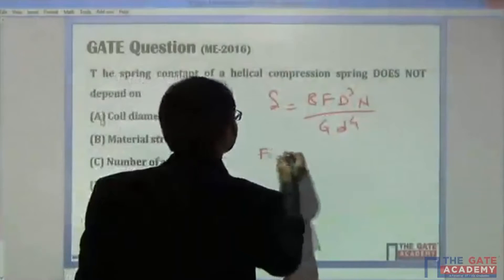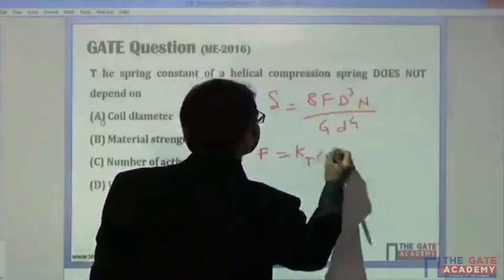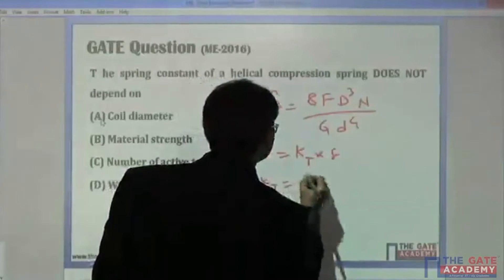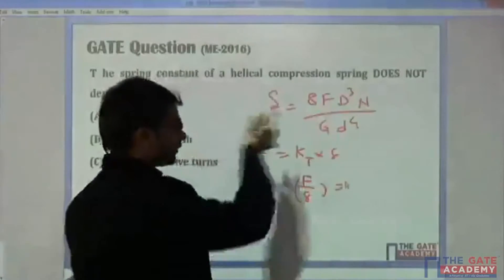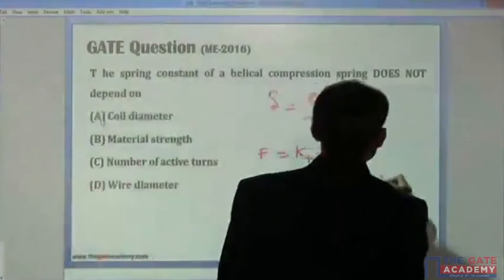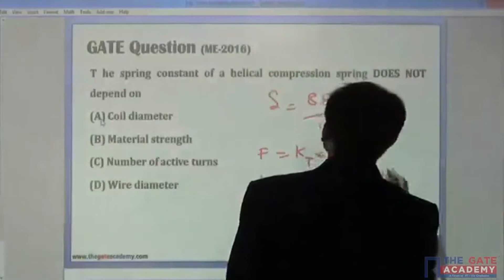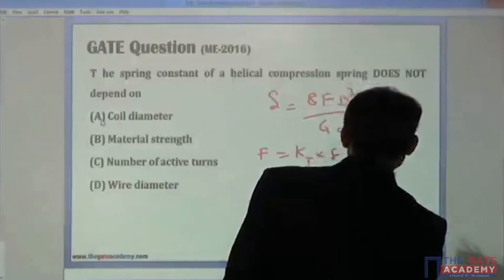We know force is equal to spring constant into delta. So spring constant is nothing but force by delta. If you get the value of F by delta, we will be getting the answer as Gd⁴ by 8D³N.